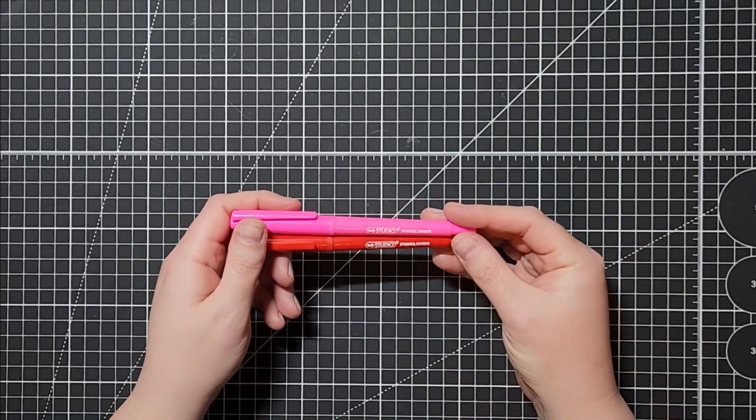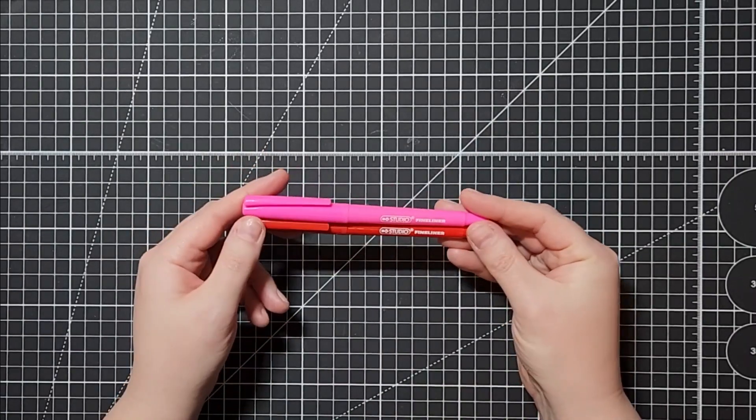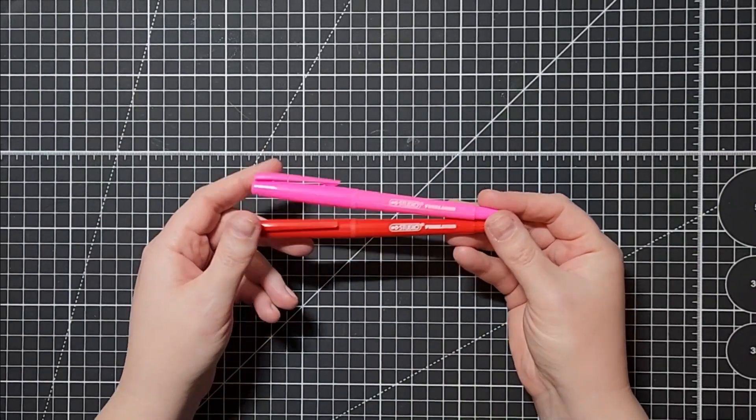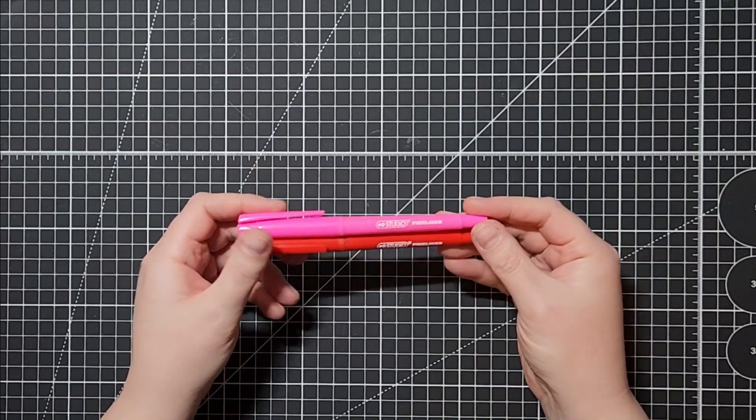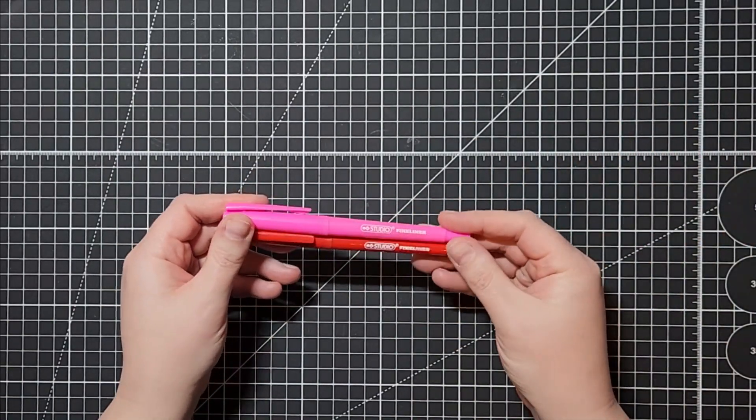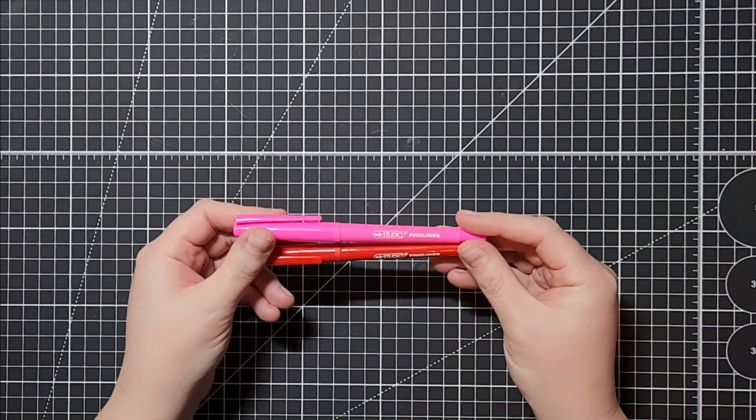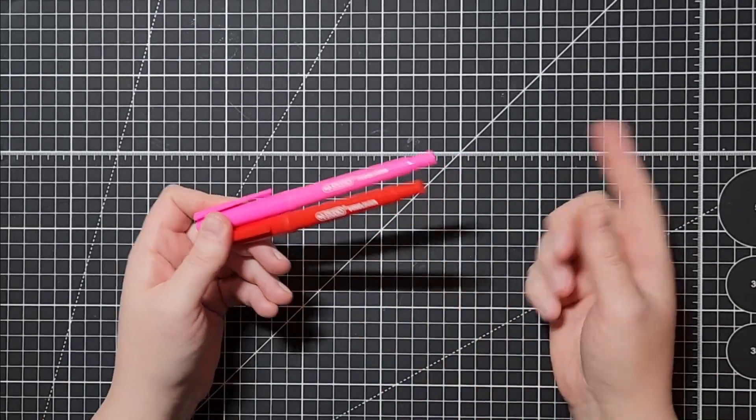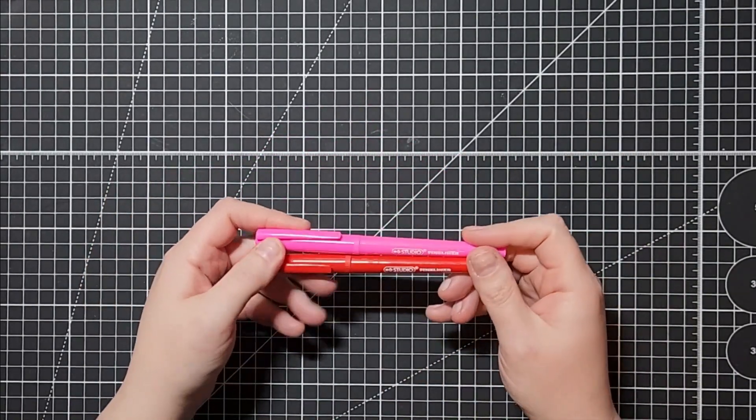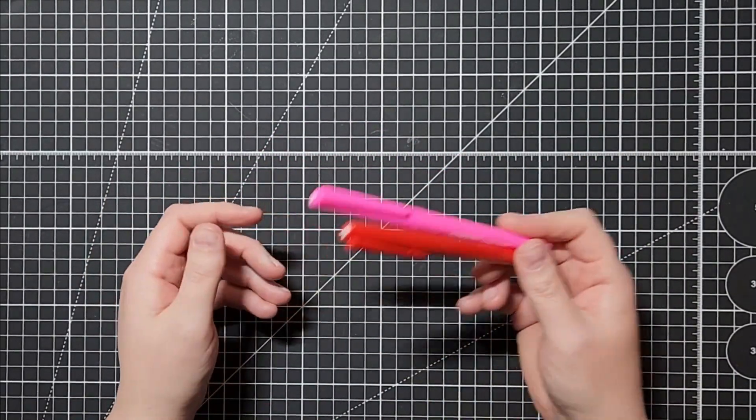These fine liners are also from the dollar store and I think you get 12 in a pack. They might be like three or four dollars, but I've found that these are also alcohol marker friendly. So if you want to line with these or draw with these on your card and then color with your alcohol markers, these won't bleed which is great.